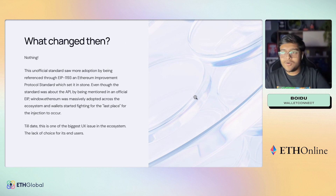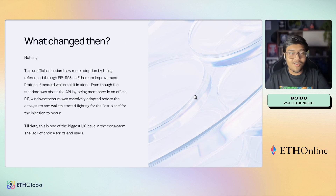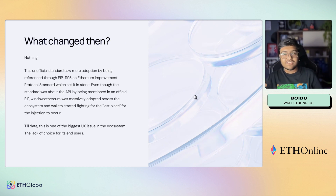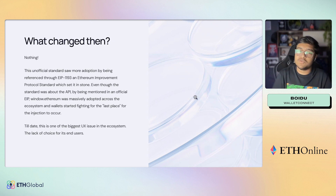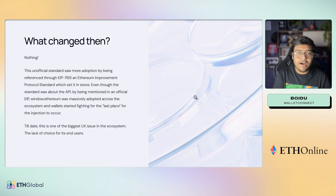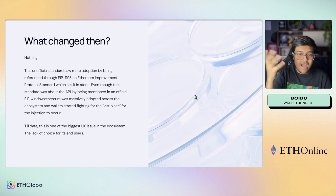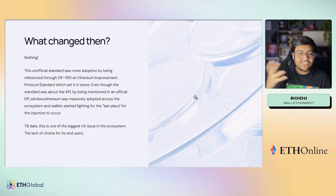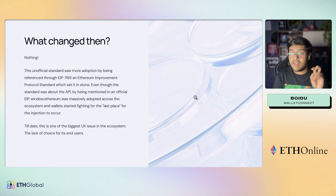So what changed? It's been since 2015 — something must have changed, right? Unfortunately, no. This unofficial standard saw more adoption by being referenced by EIP 1193, which was on a completely different topic, but it set window.ethereum in stone. Even though the actual standard was about the Ethereum provider API, being mentioned by an official EIP meant it saw massive adoption, and wallets started fighting for the last place for this injection to occur.